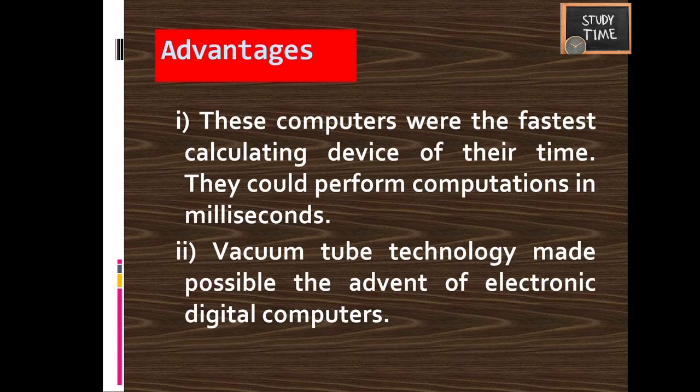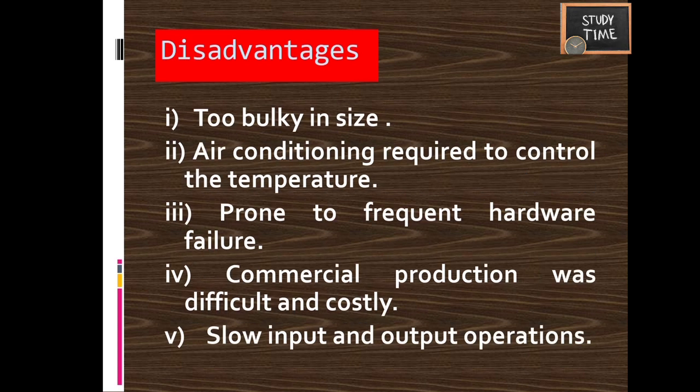Advantages of first generation computers: they were the fastest calculating devices of their time, and vacuum tube technology made possible the advent of electronic digital computers. Disadvantages: very big in size, air conditioning required to control temperature due to excessive heat, frequent hardware failures, and commercial production was difficult and costly. Input/output operations were also very slow.